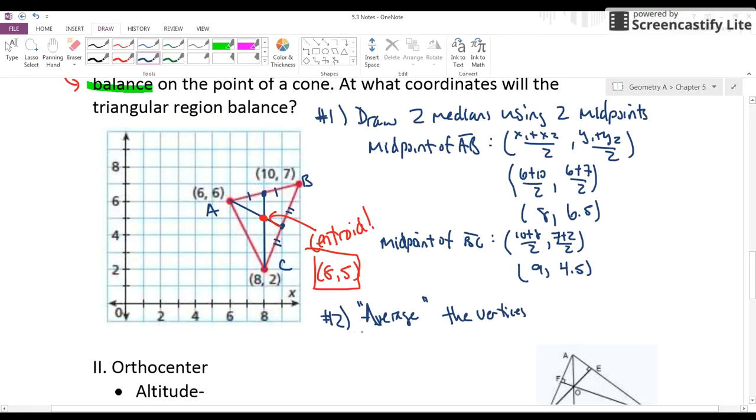Which means all you're going to do is do x1 plus x2 plus x3, the three different x values, divide it by three. Y1 plus y2 plus y3, the three different y values of the vertices, and divide it by three. And let's see if we get the same thing.